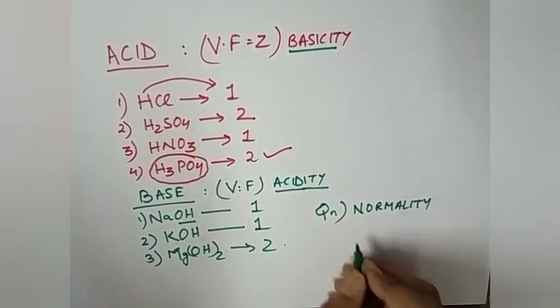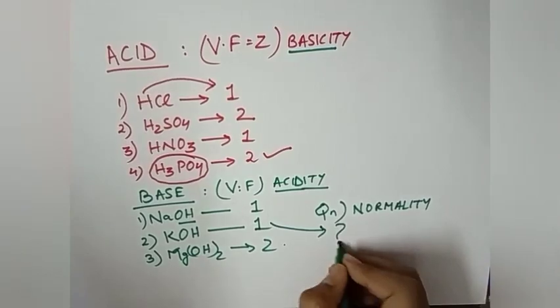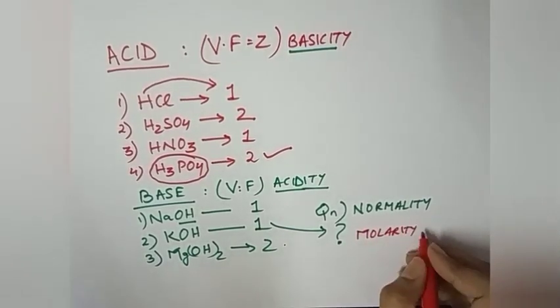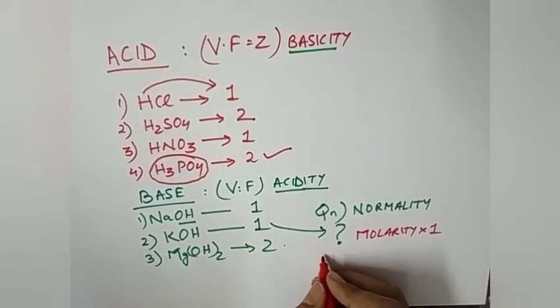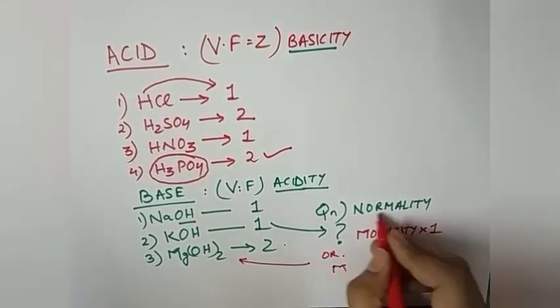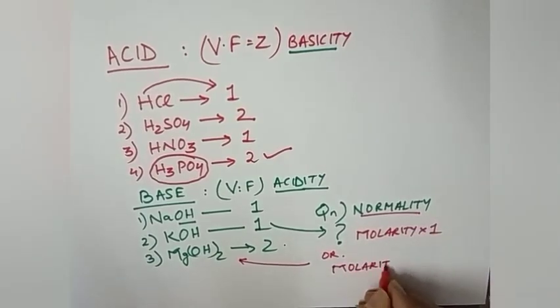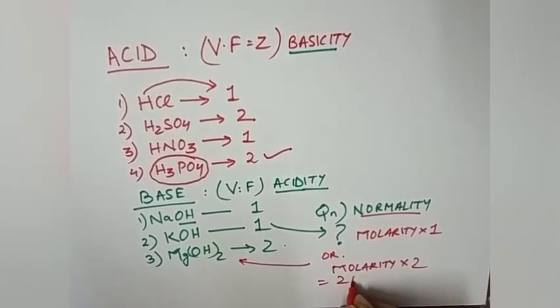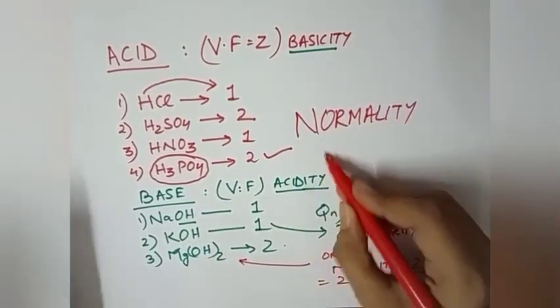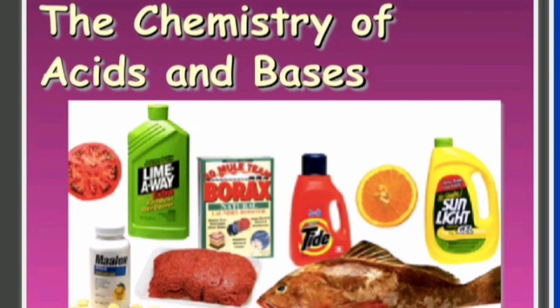Similarly for Mg(OH)2 it can give two OH- ions so its valence factor will be two. So if in the question it is asked to find out the normality of KOH, simply you have to multiply its molarity into the variance factor that is one. Similarly for Mg(OH)2 normality, multiply the molarity into two that is its valence factor.